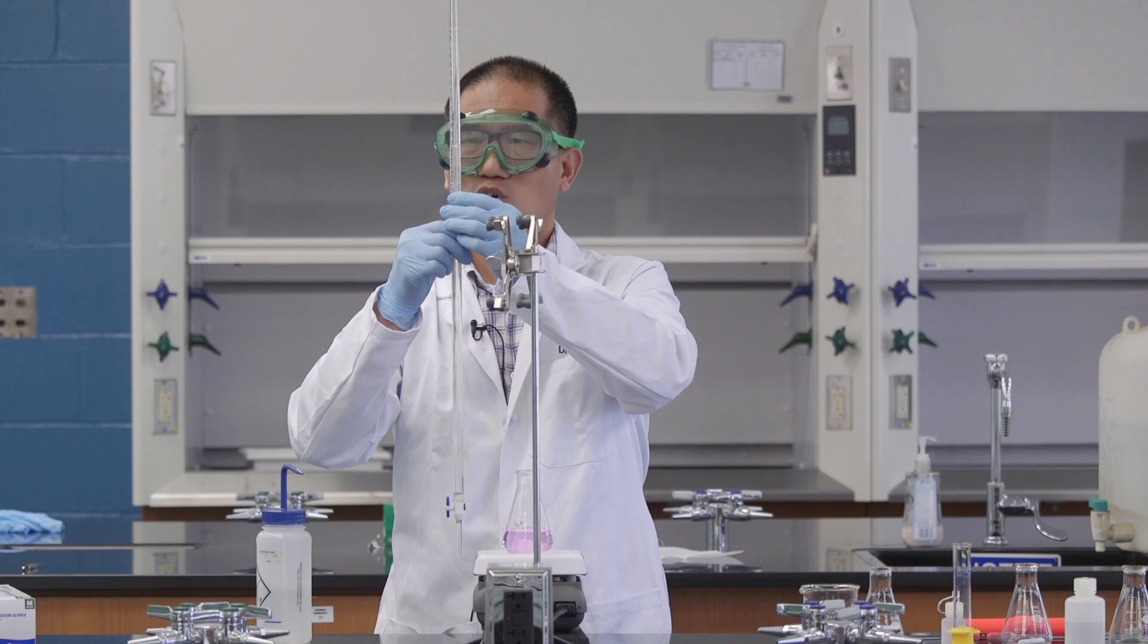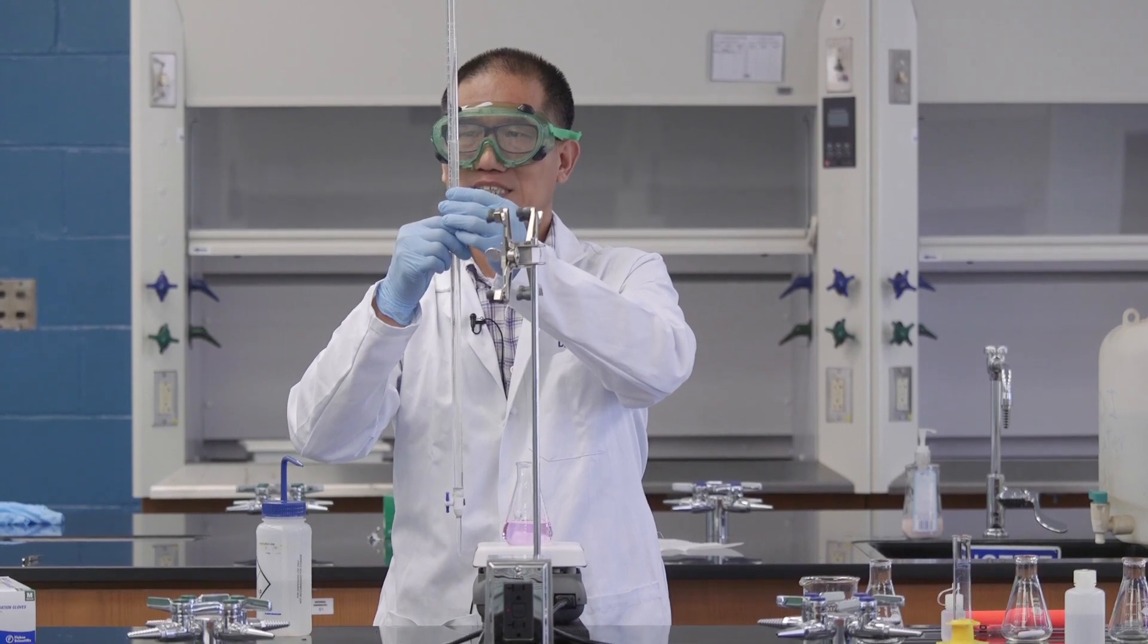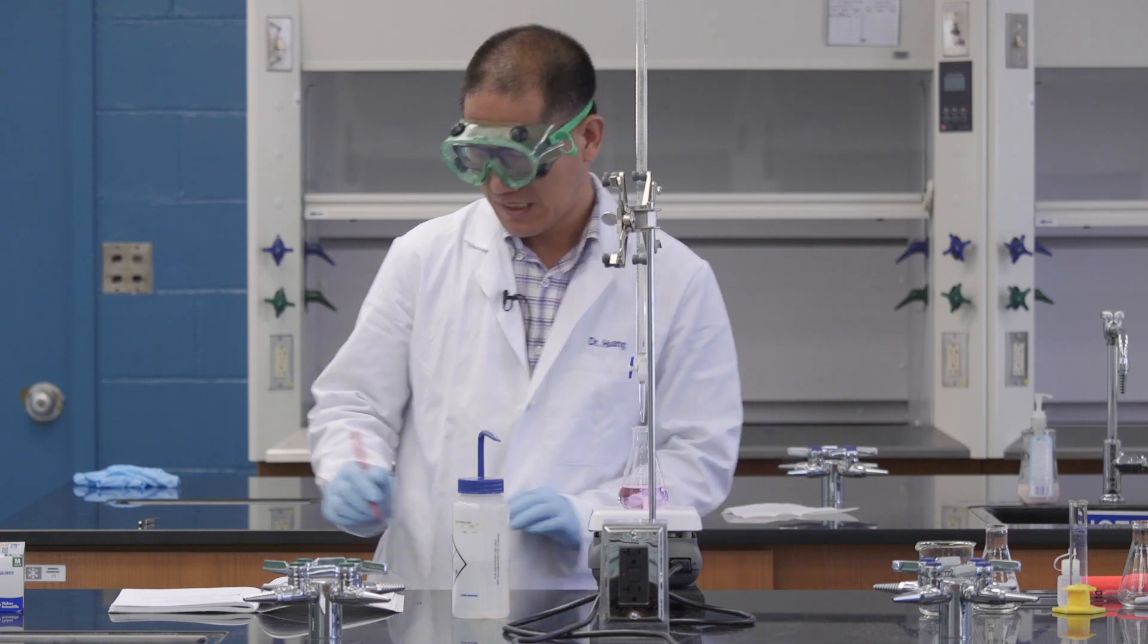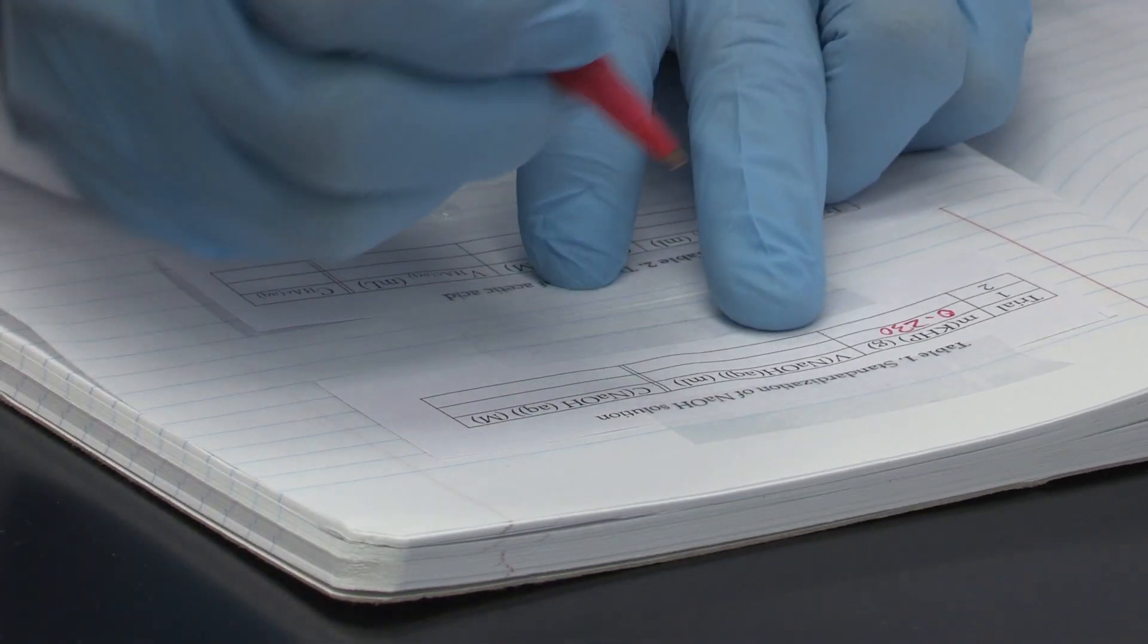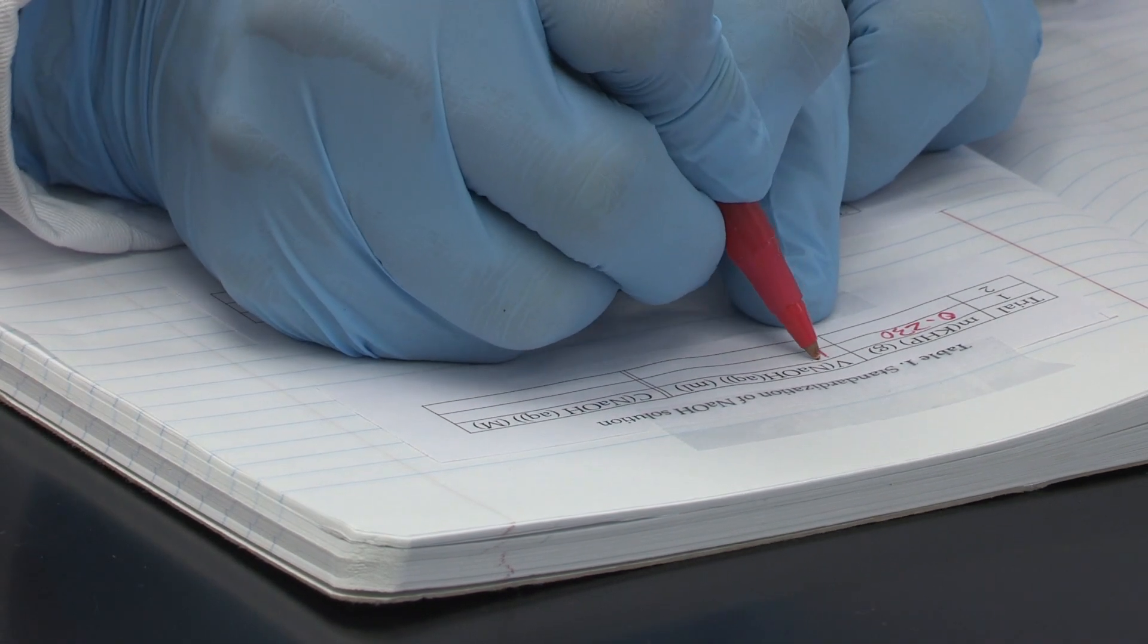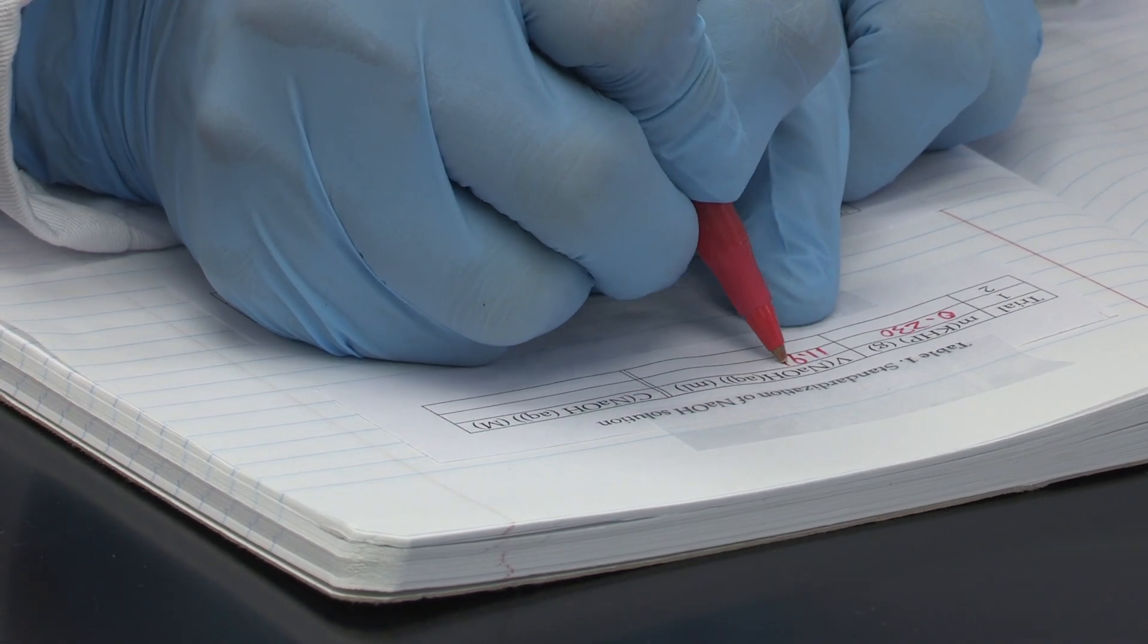Remember, you always need to estimate another digit. Let's record the data immediately. The volume of sodium hydroxide solution we use is 11.91.